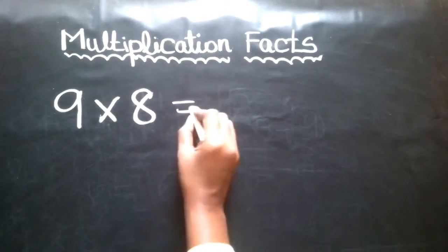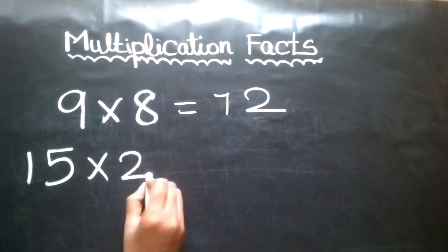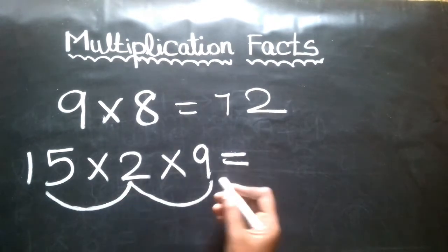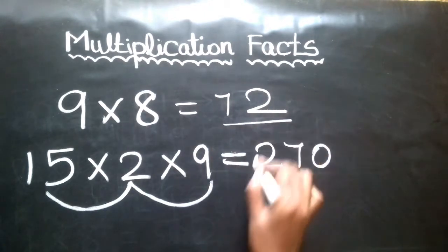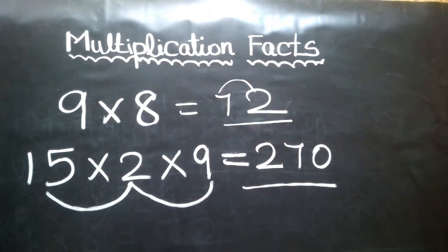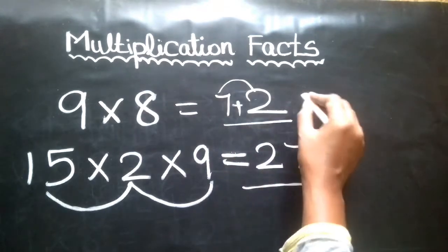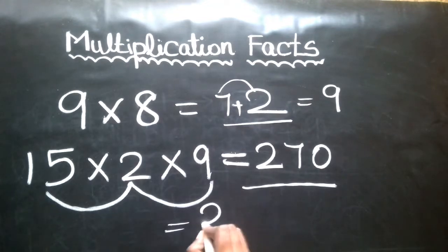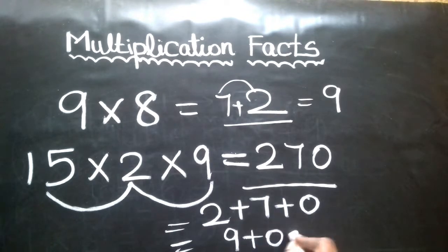For example, 9 times 8 — this answer is 72. Next, 15 multiplied by 2 into 9: so 15 into 2 is 30, and 30 into 9 is 270. Notice this product: the two digits sum — the sum of the digits — 7 plus 2 equals 9. That is the digit sum. And 2 plus 7 plus 0 equals 9 plus 0, which is 9.